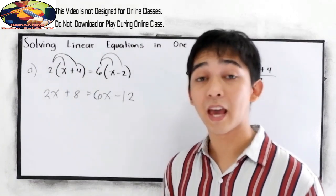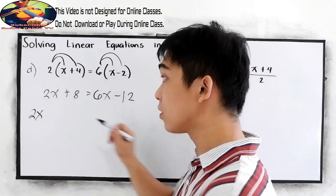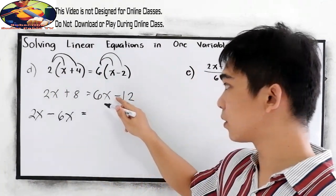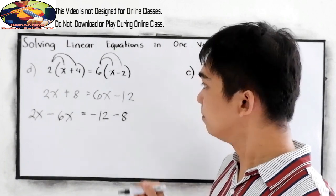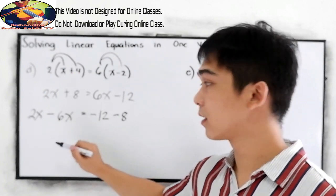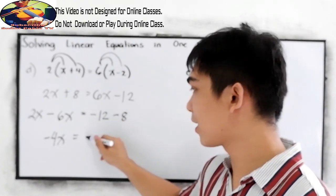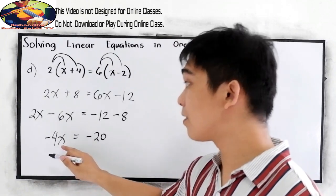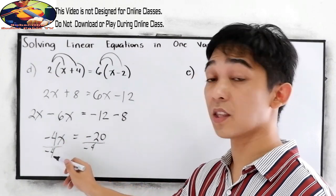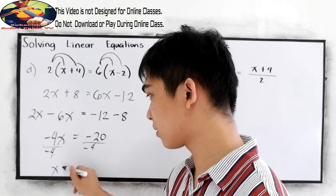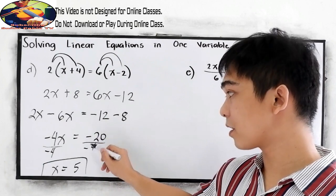We need to combine like terms. Copy 2x; positive 6x moves to the left and becomes negative 6x. This is equal to negative 12, and positive 8 moves to the right to become negative 8. So 2x minus 6x is negative 4x, equal to negative 12 minus 8, which is negative 20. Divide by negative 4: negative 4 divided by negative 4 is positive 1, giving us x. Negative 20 divided by negative 4 is positive 5. So x equals 5.